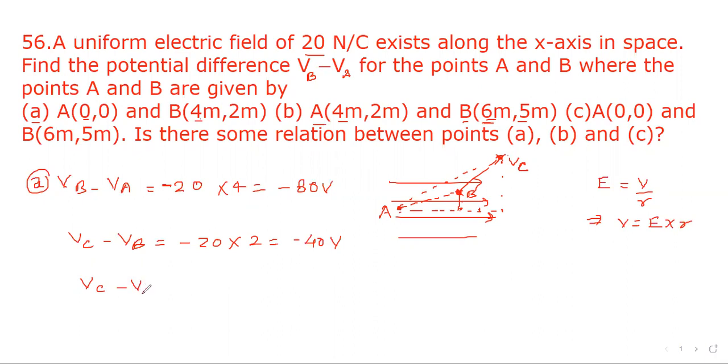VC minus VA. So electric field will remain same and difference in x coordinate will be this point 0,0 and this point is 6,5. It means x coordinate changes from 0 to 6. So minus 20 times 6 that is minus 120 volt.